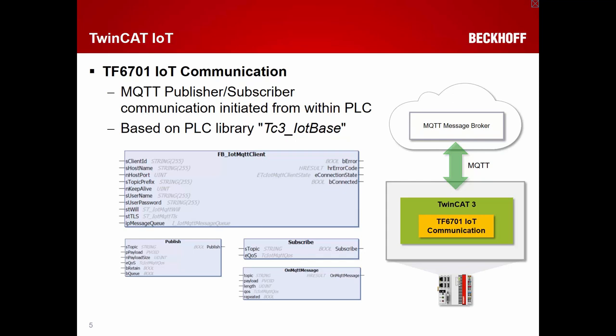Different function blocks are available that enable you to establish connectivity with an MQTT message broker, which can sit in the public cloud, in the local network, or even on an industrial PC. You can use security mechanisms like TLS, username and password, and certificates to encrypt your communication channel. After connecting to the broker, you can publish data structures, single variables, or arrays, and also subscribe to receive data.